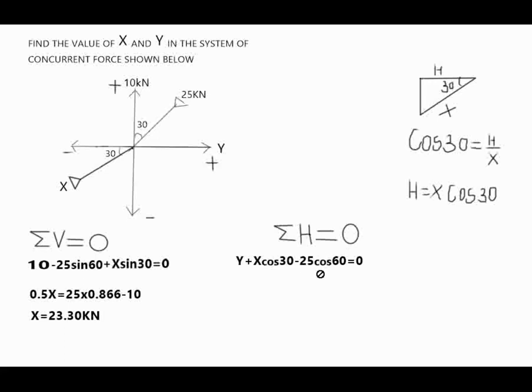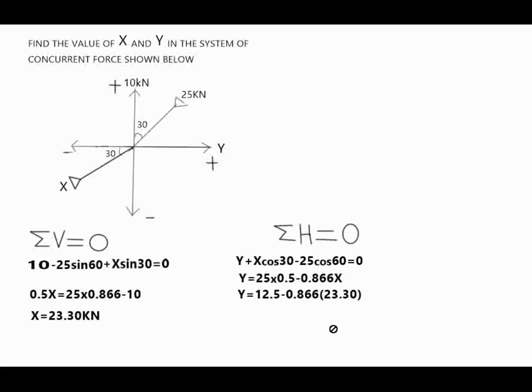Some other person can decide to say minus 25 sin 30. It doesn't matter, whichever way. But as a beginner, work with cos when we talk about horizontal resolution. When you improve, you can decide to use any one you feel like. You can go ahead to resolve this. And you also know that the value of x is already known to be 23.30 kN. So you can now substitute the value of x. And finally, your y will give you minus 7.68.